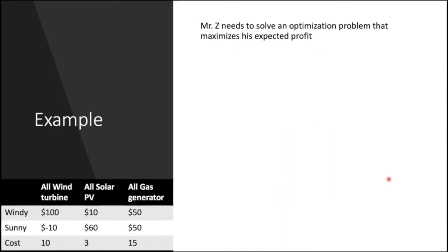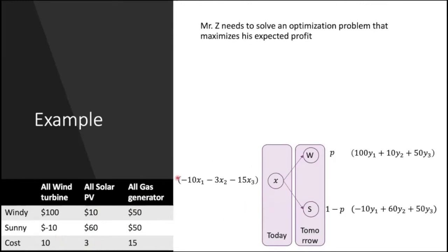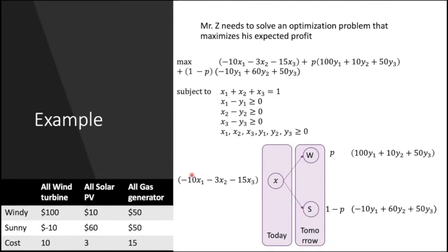Here is an extended problem: if we now have a cost for making the decision today — say $10 for deciding to use the wind turbine tomorrow, with similar costs for solar and gas — then the problem formulation adds that cost term to the objective function. The updated formulation includes this first-stage cost, subject to the constraint that the amount we decide to use tomorrow must be less than or equal to what we committed to today. You could solve this at home for practice.